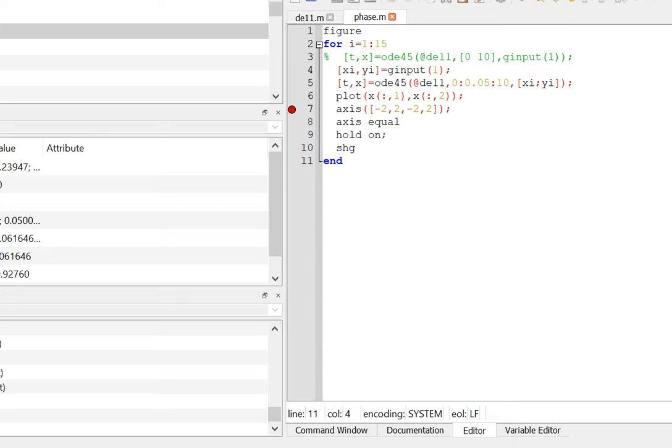And this command ginput will capture the initial conditions from the mouse click. The commented line there in green, that was the version that worked in MATLAB, and it turned out I had to change it slightly when I switched to Octave here. Here I'm calling ODE45 and DE11, or differential equation week 11, is the name of the routine that contains the differential equation. Here it is here. It's just exactly the formula that I was writing out in mathematical notation earlier.